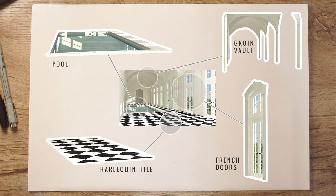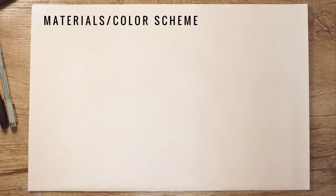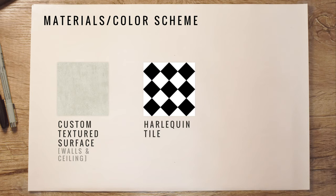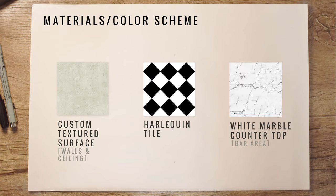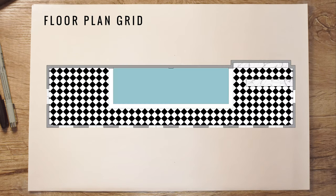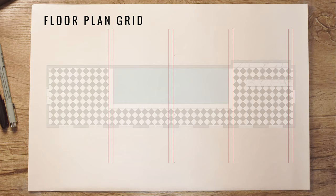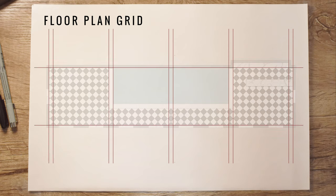The groin vault actually is beautiful. For the materials and color scheme we have the custom textured surface for the walls and ceiling, the harlequin tile throughout, and a white marble countertop for the bar area. Looking at the floor plan again, it's sectioned into four quadrants and this grid will help us understand the groin vault ceiling and how it's constructed.